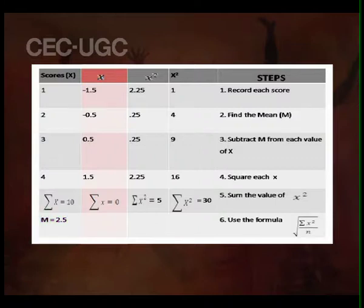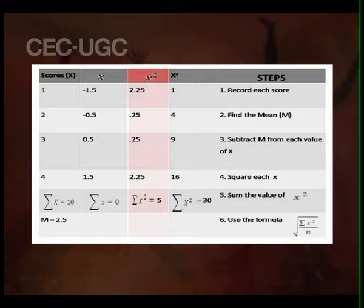The first deviation score is minus 1.5, the second is minus 0.5, the third is 0.5, and the fourth is 1.5. The third column represents the square of the deviation scores: 2.25, 0.25, 0.25, and 2.25. The sum total of the squared deviation scores is 5. The fourth column represents the square of the raw scores: 1, 4, 9, 16 — with a sum total of 30.